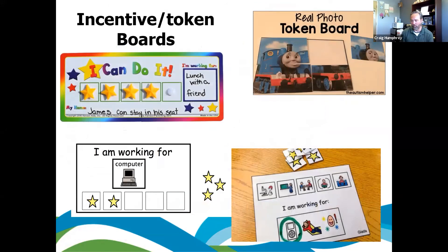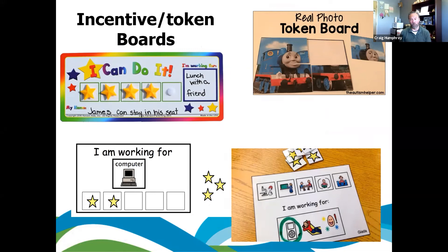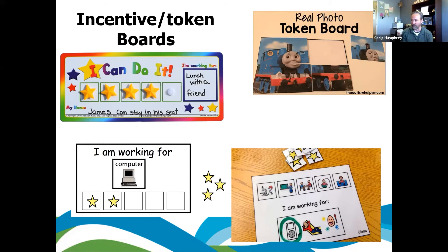Incentive boards — big fan of what-I'm-working-for boards, token boards, or puzzle boards. Another good way to show progress through an activity. You've got a star board where he can earn computer time for five stars — you can give two stars right off the bat for sitting down at the table, then slowly do the last three throughout the activity. A puzzle board of Thomas the Train, where each piece earned shows progress toward getting Thomas time. Visuals communicate expectations very well and show progress through the activity.